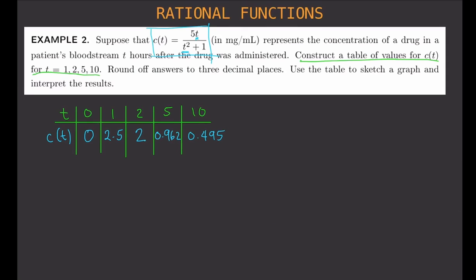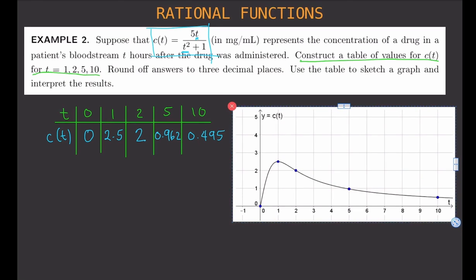The next thing we need to do is use the table to sketch the graph. We already have a pre-made graph. Here you can see: T is on the horizontal axis and C of T on the vertical. When T is 0, C of T is 0. When T is 1, C of T is 2.5. When T is 2, C of T is 2. When T is 5, C of T is about 0.962, approximately 1. When T is 10, C of T is about 0.495. That's the graph for this function.